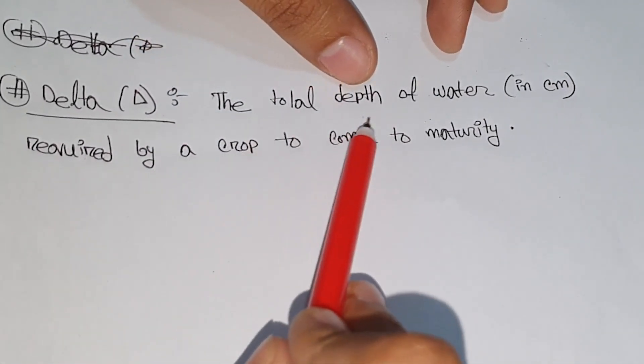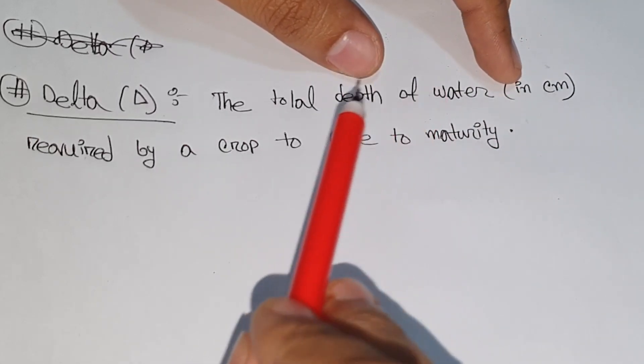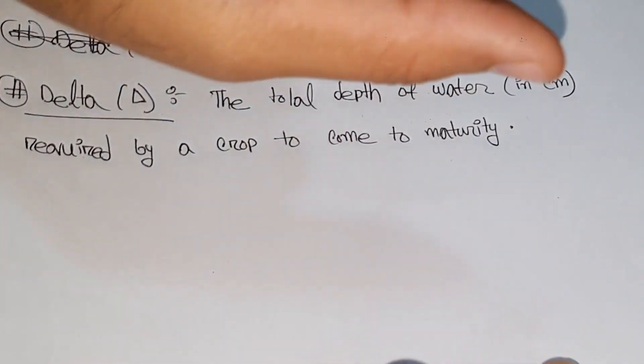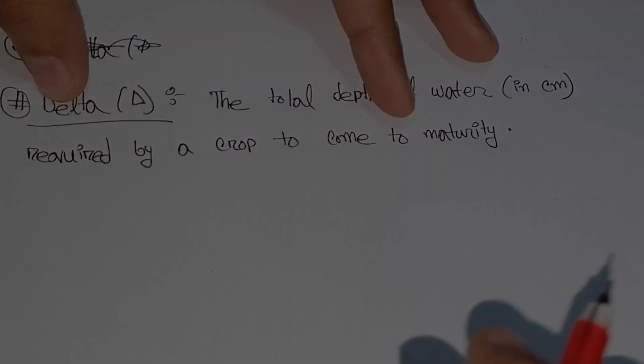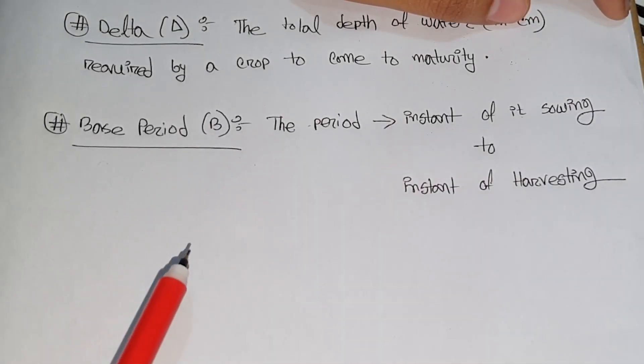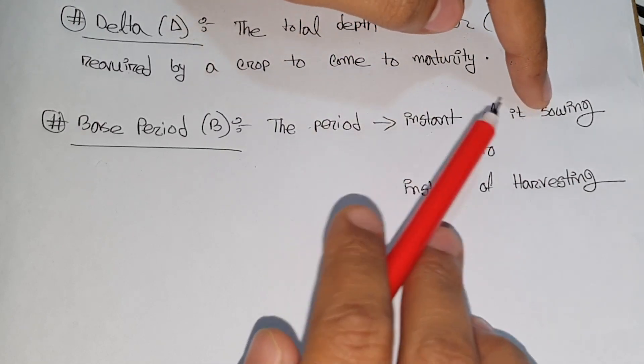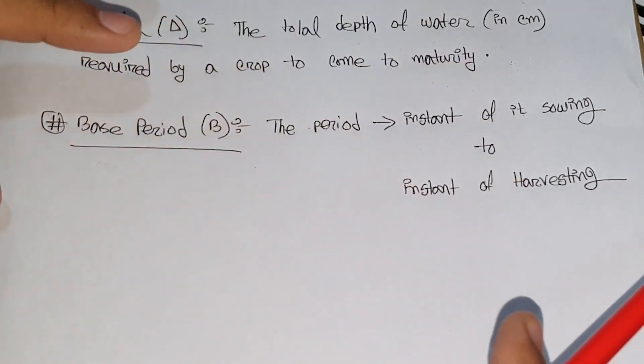The delta is the total depth of water in centimeter. For this crop to reach maturity, the total depth of water is the delta. This is the base period. The base period is the duration from the instance of sowing to the instance of harvesting.